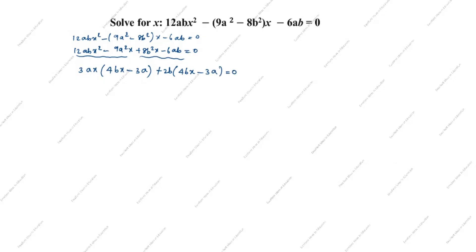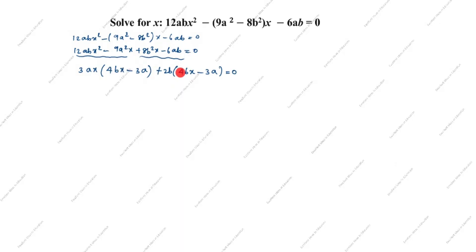Let's verify: plus into plus is plus, plus into minus is minus. 2 fours are 8, b times b is b², so we get 8b²x; 2 threes are 6, so minus 6ab. You can see that (4bx minus 3a) is common in both groups, so we take it outside.